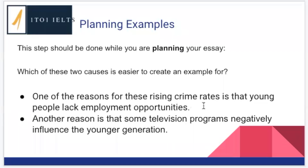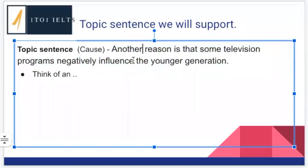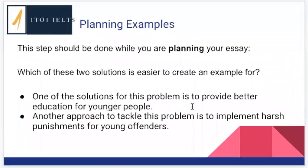These were the ideas we came up with last week. One reason for these rising crime rates is that young people lack employment opportunities, and the second idea was that some television programs negatively influence the younger generation. This is completely up to you — there's no right or wrong. I'm going to take a quick vote: which one do you think is easier to come up with an example for? For solutions, the two options were: providing better education, or implementing harsh punishments for young offenders. Which of these two is easier to find an example for?